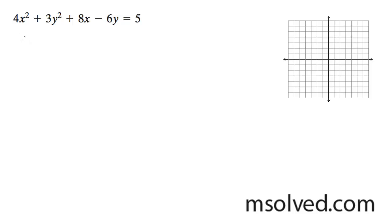So starting off here, I'm going to rewrite this. So you get 4x squared plus 8x plus 3y squared minus 6y is equal to 5.